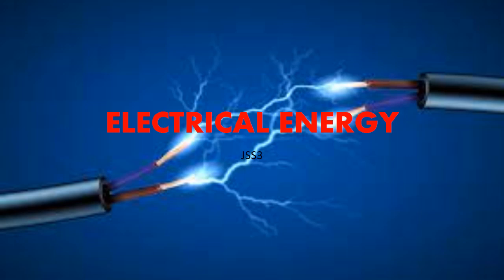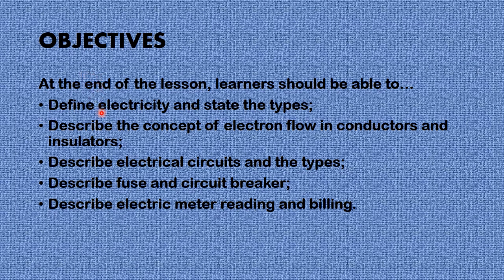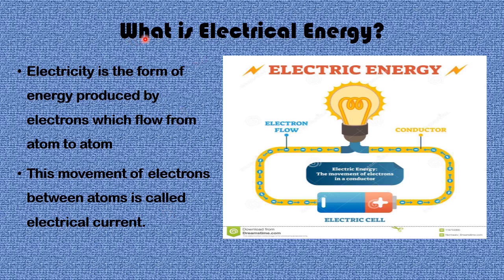Hello, it's another time for another science lesson. Today we'll be looking at electrical energy. The objectives for this lesson are to define electricity and state its types, describe the concept of electron flow, conductors and insulators, describe electrical circuits and their types, describe fuse and circuit breakers, and describe electric meter reading and billing.